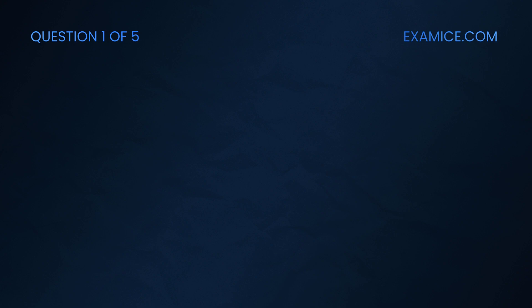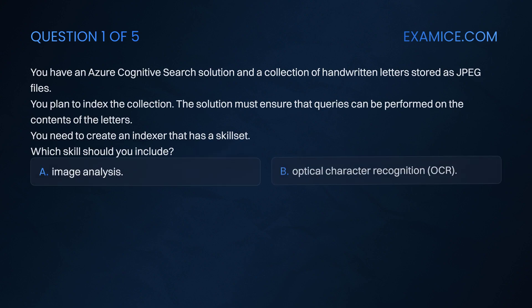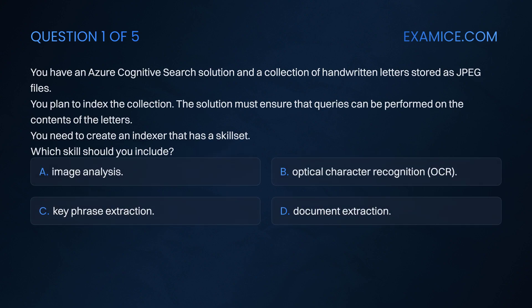Question 1. You have an Azure Cognitive Search solution and a collection of handwritten letters stored as JPEG files. You plan to index the collection. The solution must ensure that queries can be performed on the contents of the letters. You need to create an indexer that has a skill set. Which skill should you include?